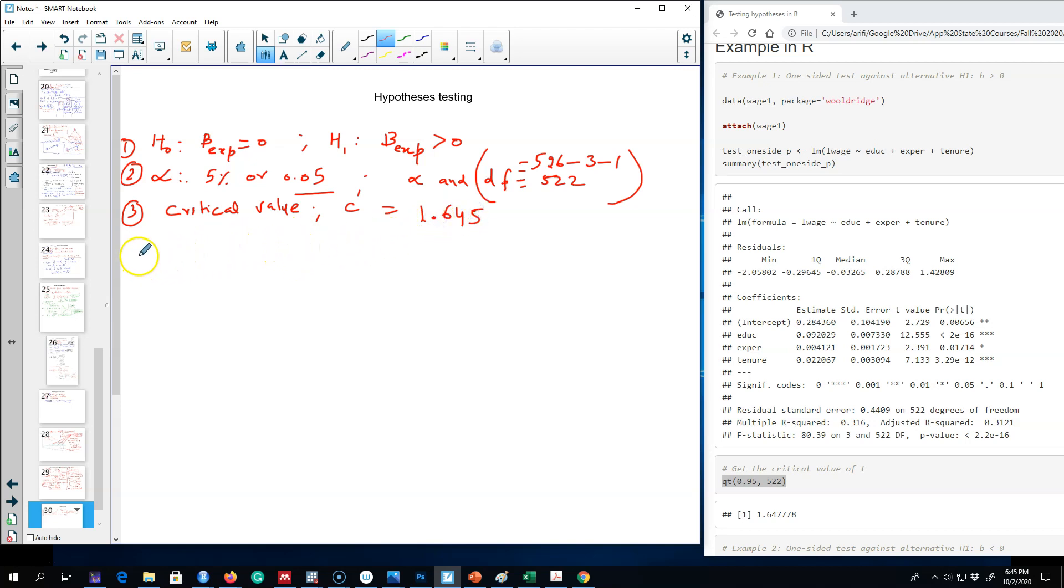Now everything is set up. All we have to do is calculate a t value for our beta experience. That is beta experience minus beta for experience (the actual population beta) divided by the standard error of beta of experience. Beta experience estimated is 0.044—this value will come from regression output—minus the hypothesized value, which is zero, divided by the standard error. Our calculated value is approximately 2.41.